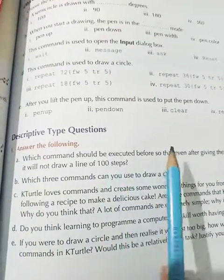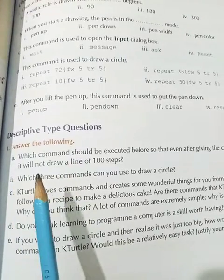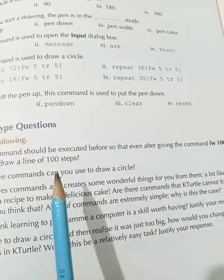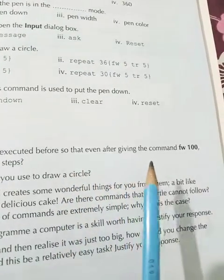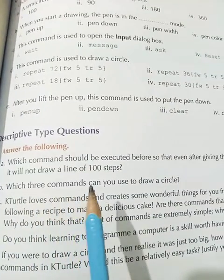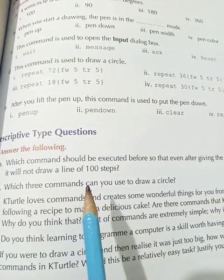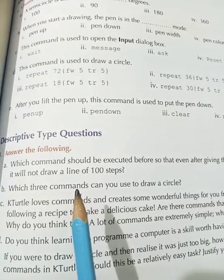Write today's date and day over here. Question number 1, answer the following. Part A: which command should be executed before so that even after giving the command FW space 100, it will not draw a line of 100 steps? Yes, the answer is pen up.